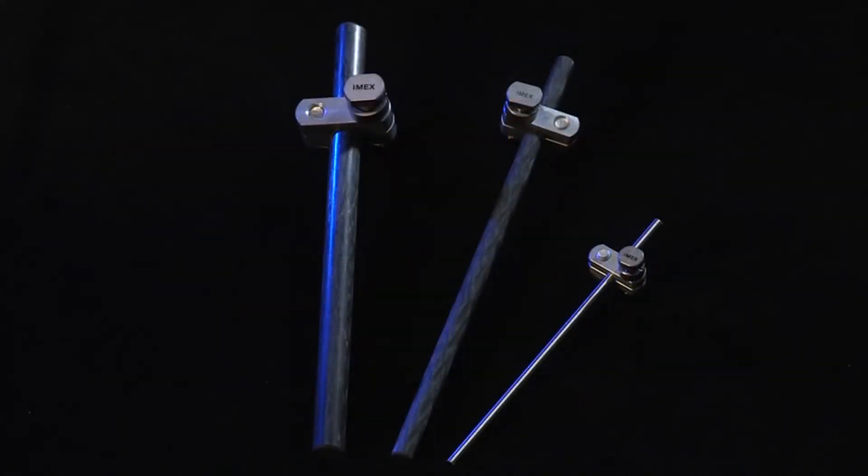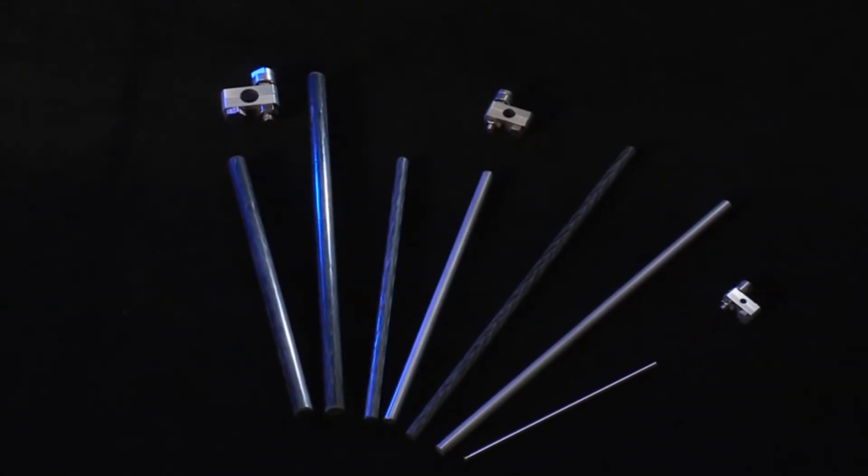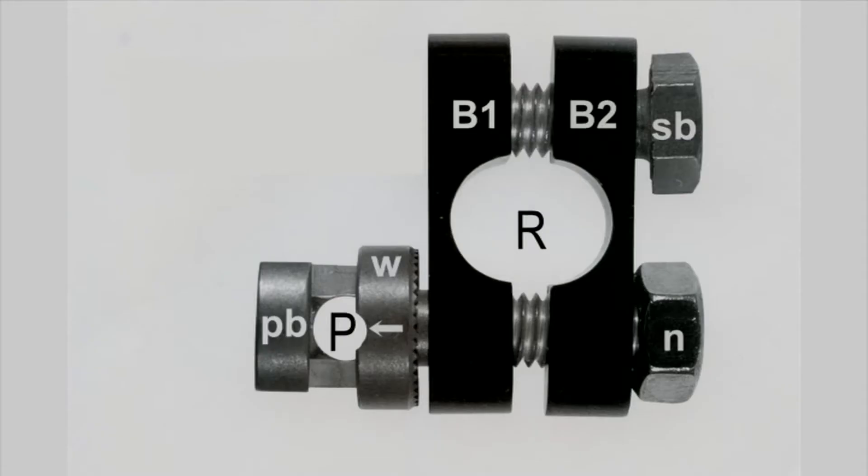Currently, the SK ESF system is available in three sizes: mini, small, and large. Each size represents a scaled up or scaled down version of the basic SK fixation clamp and rod. Let us review the anatomy of the SK single clamp.